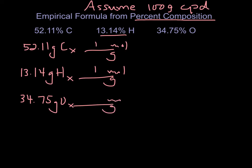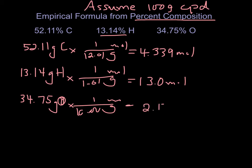1 mole of carbon is 12.01, hydrogen is 1.01, and oxygen is 16. So this is going to come out to be 4.339 moles. This is going to be 13.0 moles. And this is going to be 2.172 moles.